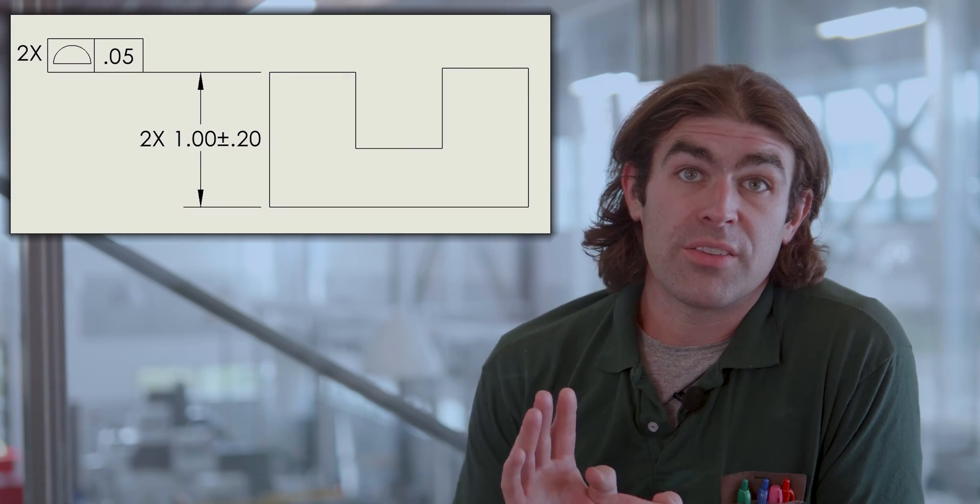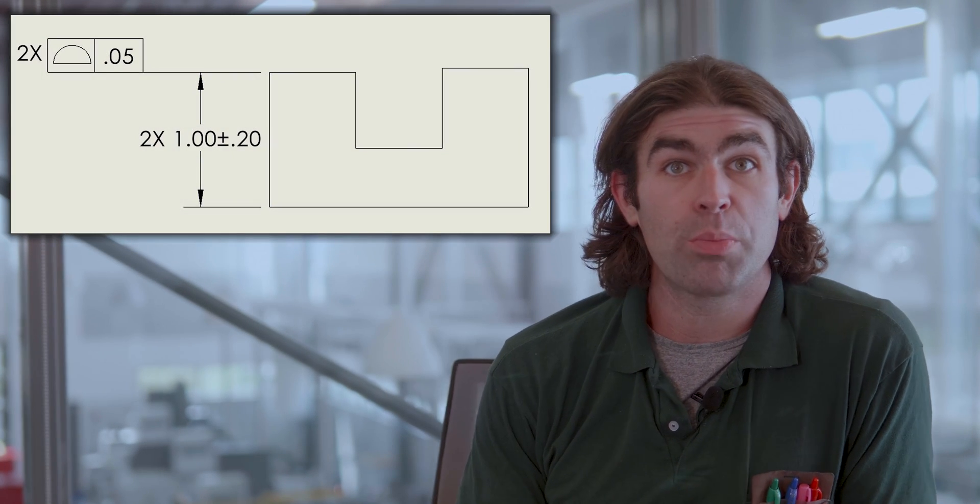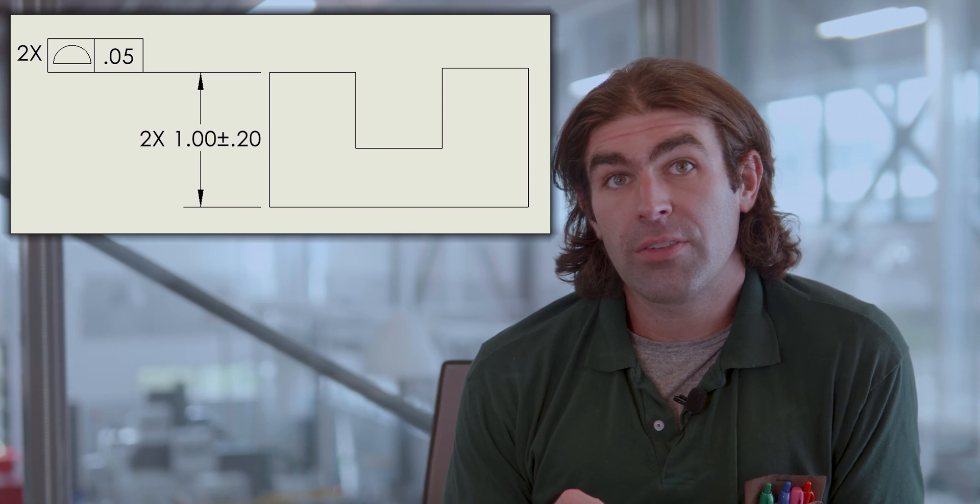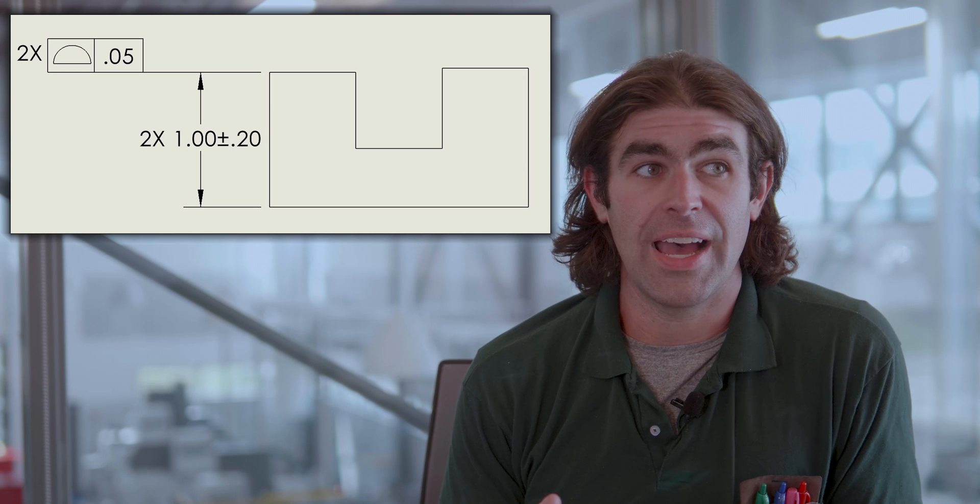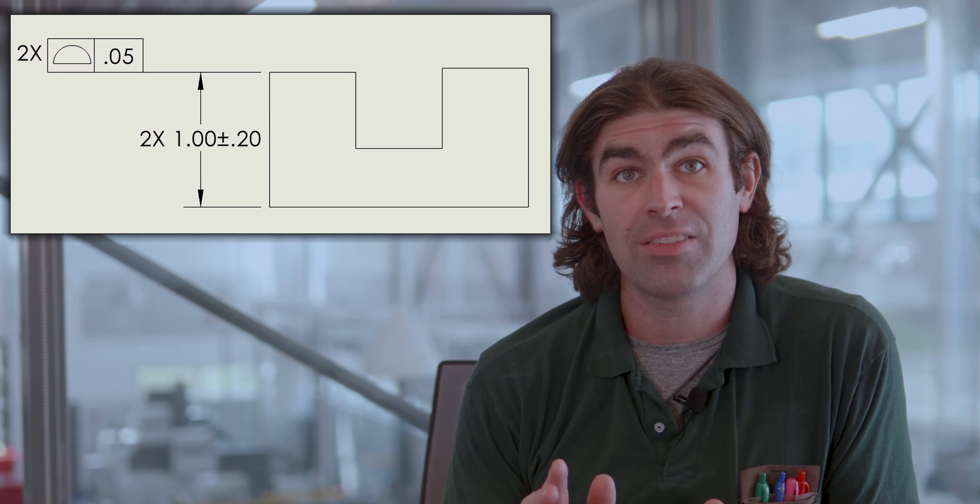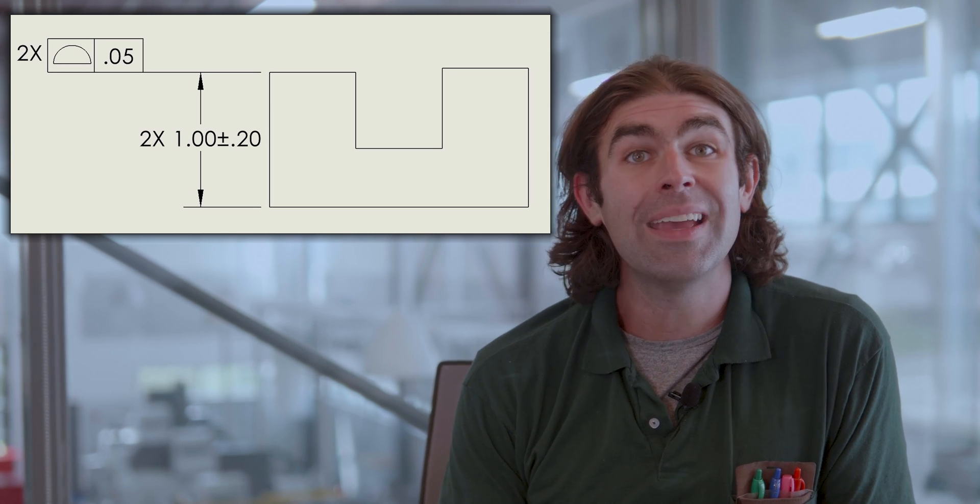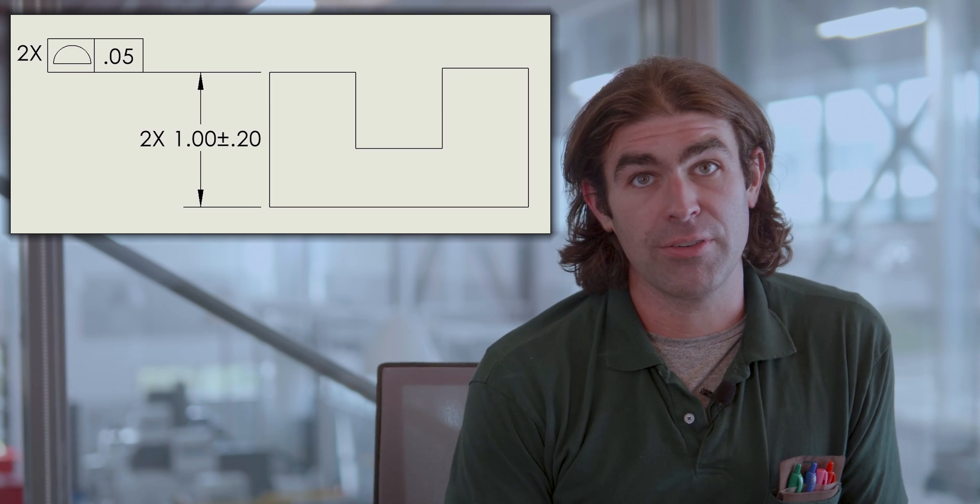The way we do get coplanarity is with the profile symbol. In this first example I'm going to do a few profile examples. The location of the surfaces is being controlled with the limits of size. If you notice, the size dimension has a tolerance and the profile does not have a datum reference.